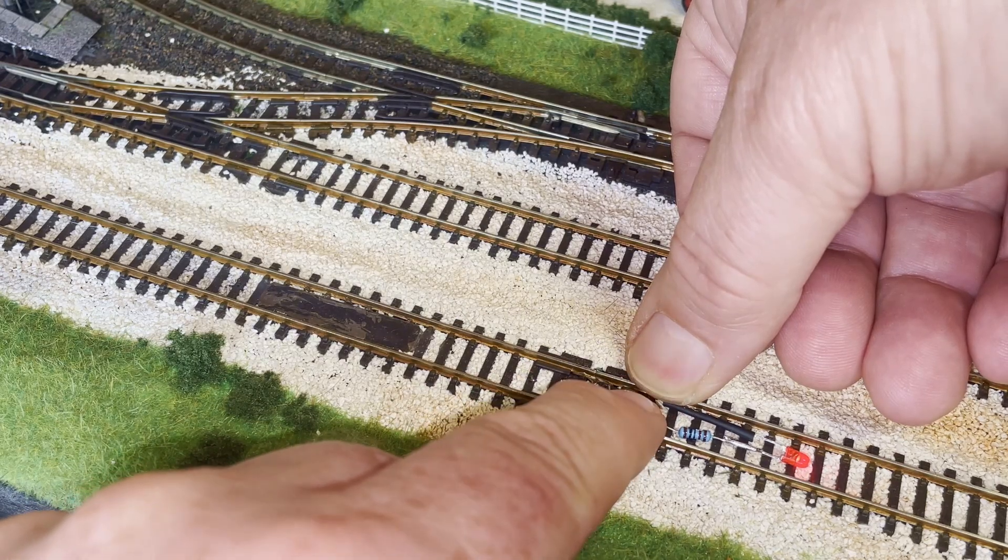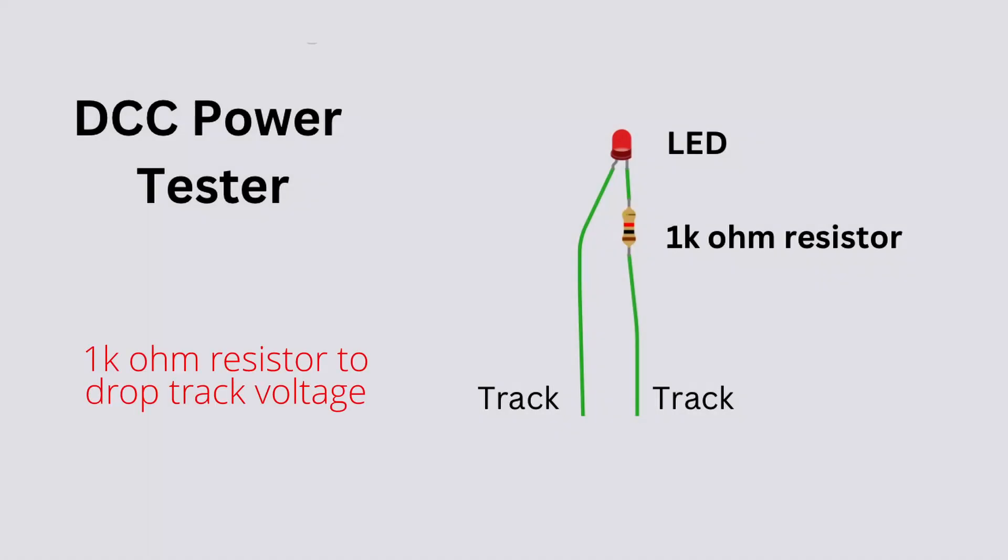I think the most critical part here is actually the 1000 ohm or 1k ohm resistor, as this drops the track voltage to a safe level for the LED. If you want a really simple track tester, this is it: the LED and the resistor, that's all you need. But today we're going to carry on and build it into the bogey to get a rolling track tester.